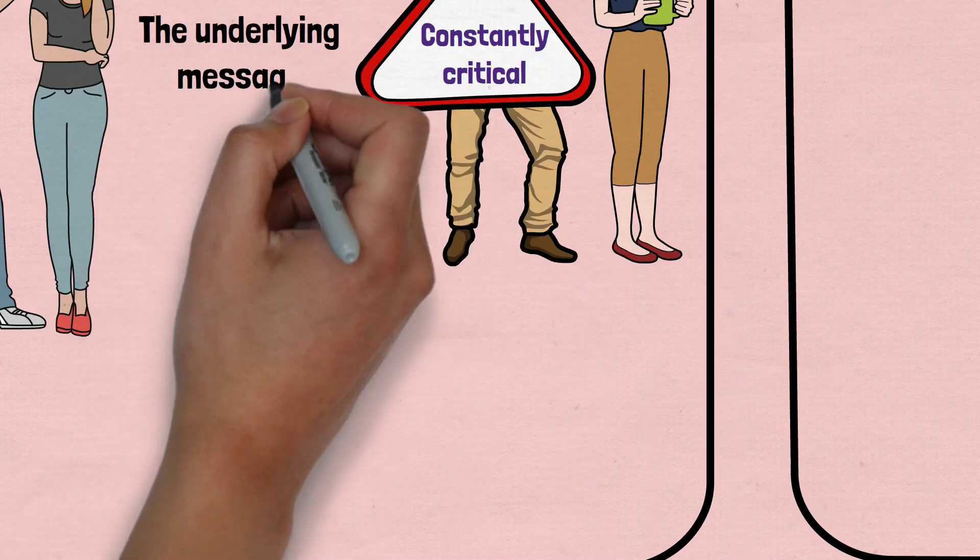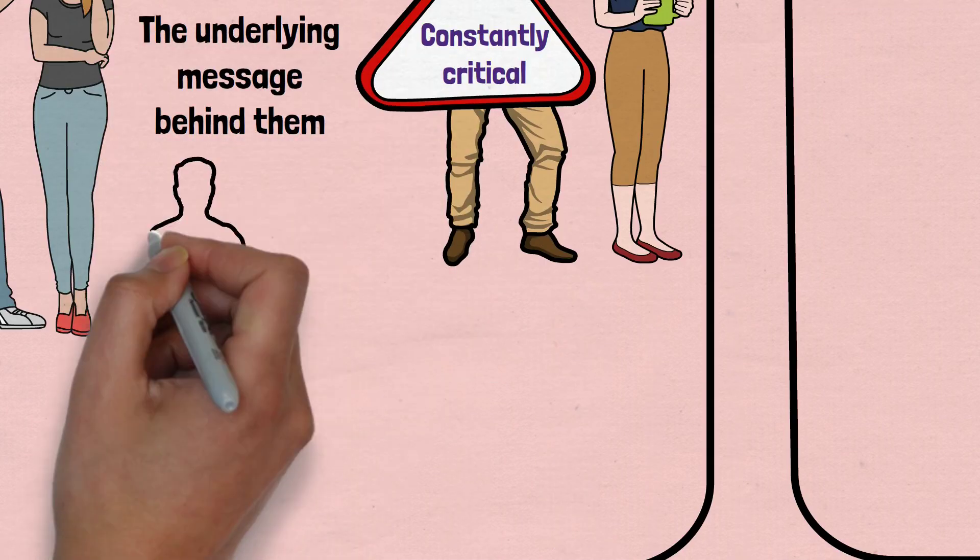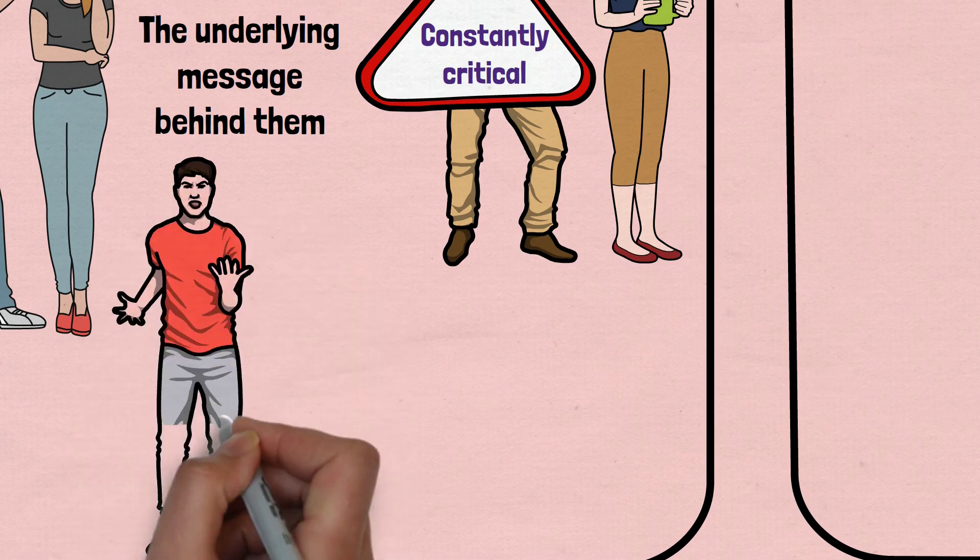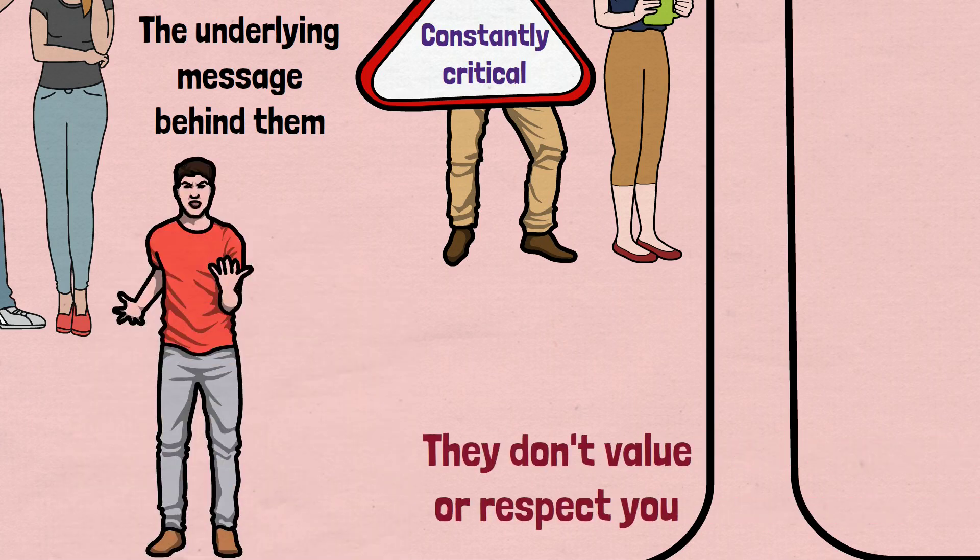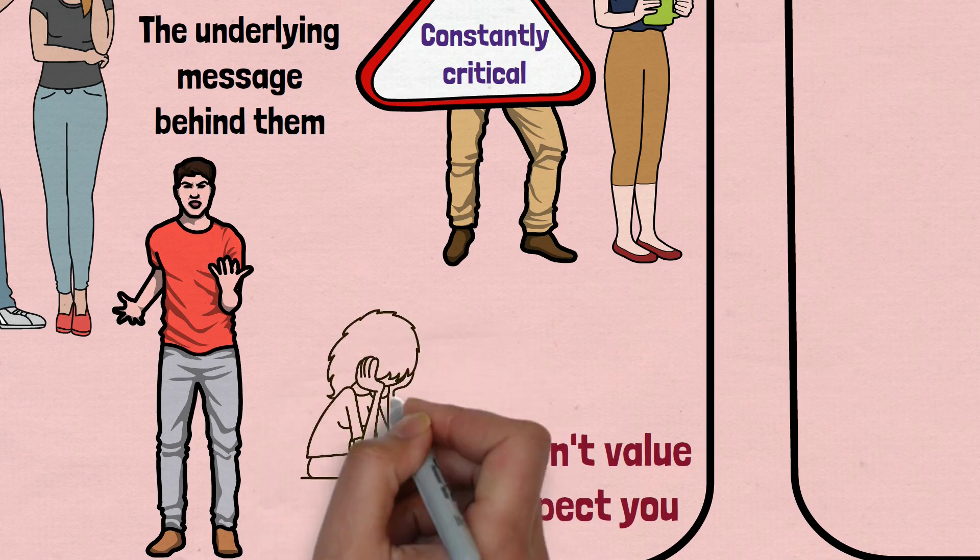But it's not just the words that are harmful. It's the underlying message behind them. When someone is constantly critical of you, they are effectively saying that they don't value or respect you. This can erode your self-esteem and leave you feeling like you are not worthy of love or happiness.